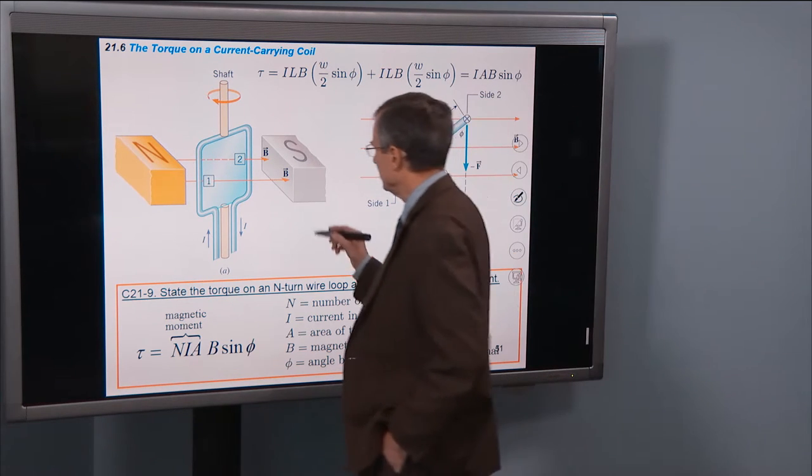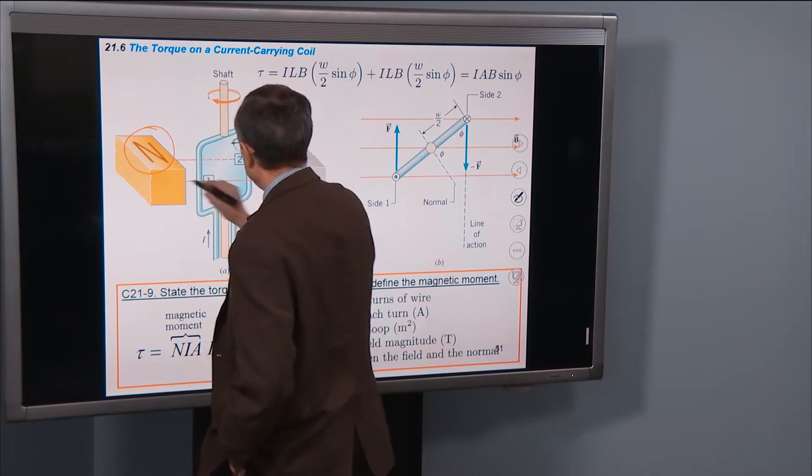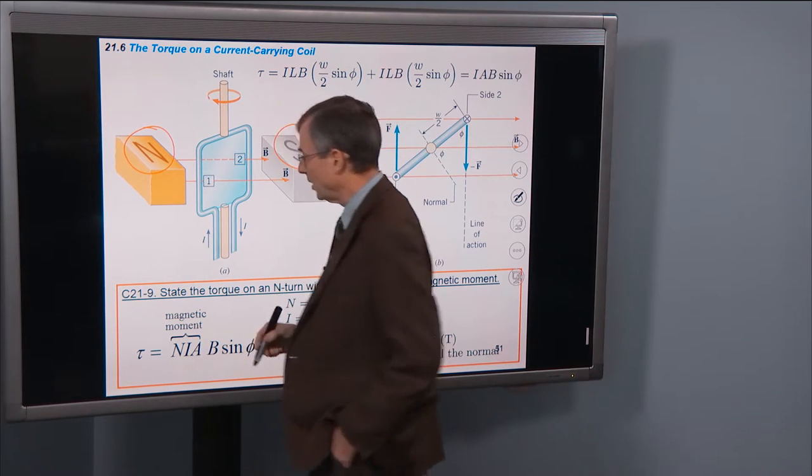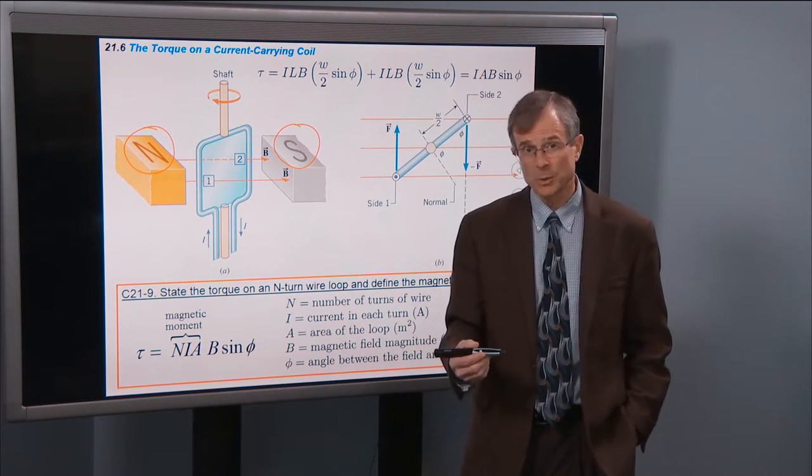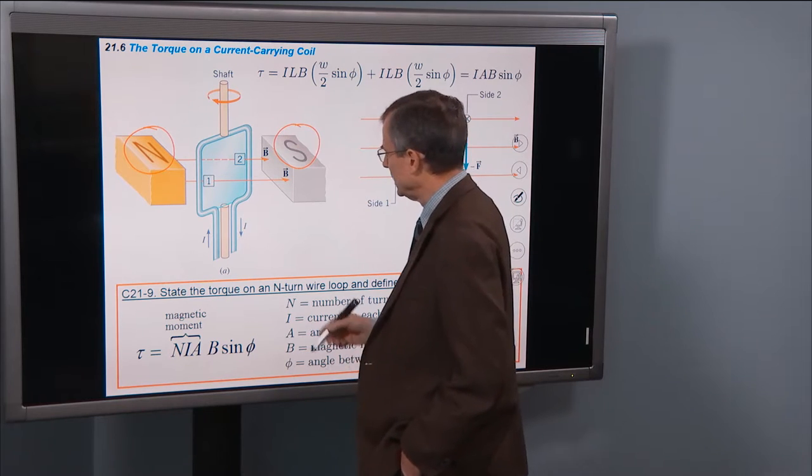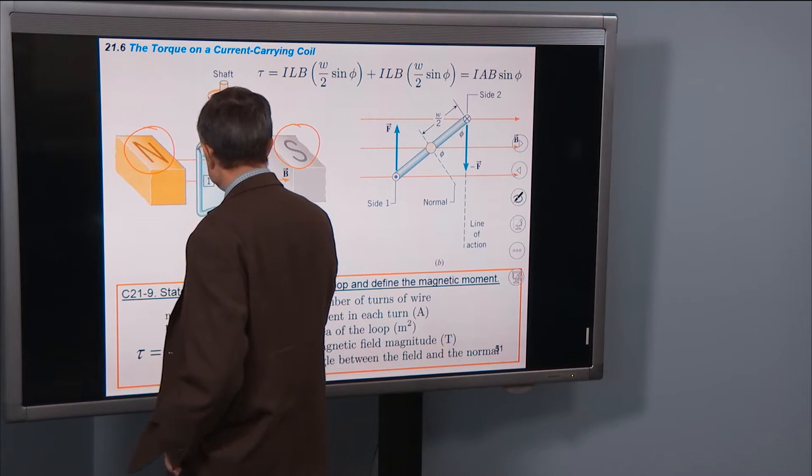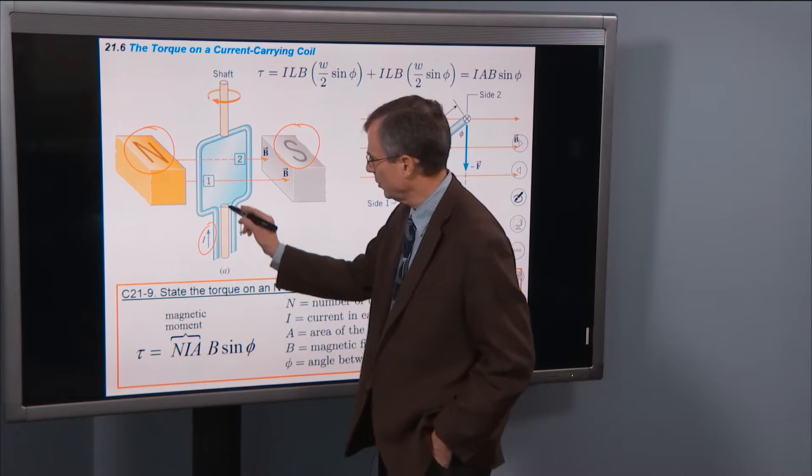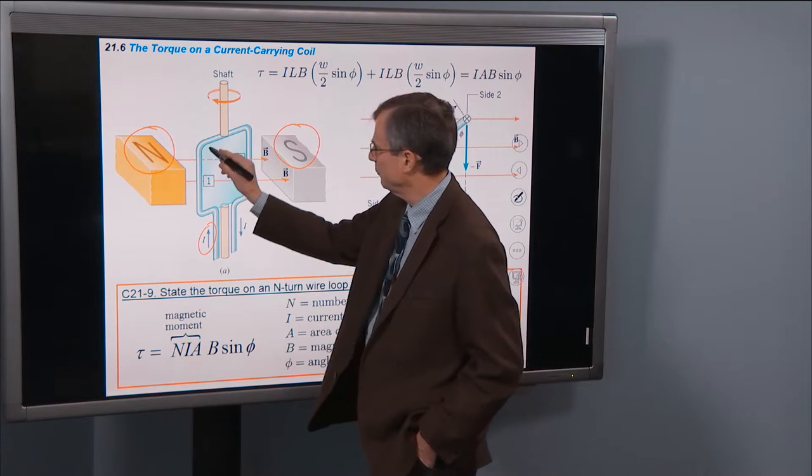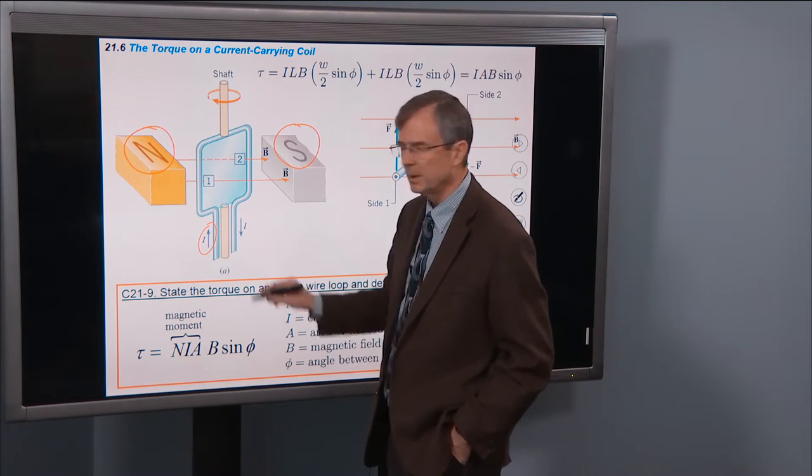So the idea here is this. We've got a permanent magnet, north pole and south pole. These can also be replaced by electromagnets. And we've got a current that goes through this coil. So this blue-ish colored thing is a coil of wire.